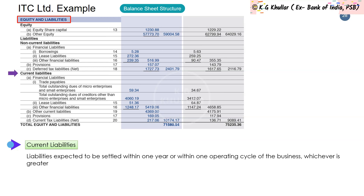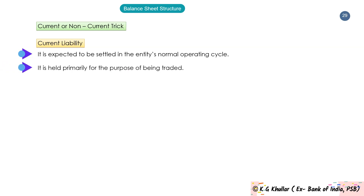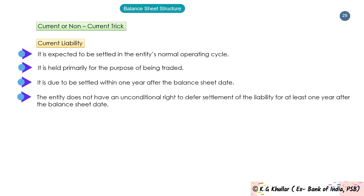Students are often confused with the terms current and non-current. The four-point criteria for classifying a liability as current are: (1) it is expected to be settled in the entity's normal operating cycle; (2) it is held primarily for the purpose of being traded; (3) it is due to be settled within one year after the balance sheet date; and (4) the entity does not have an unconditional right to defer settlement for at least one year after the balance sheet date.